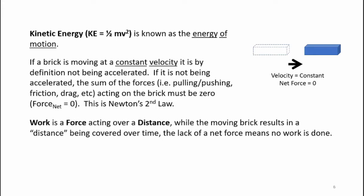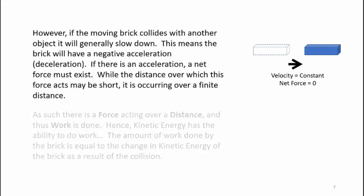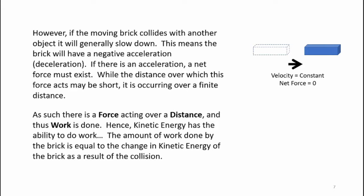Since work is a force acting over distance, while the moving brick results in a distance being covered over time, the lack of a net force means no work is done. However, if the moving brick collides with another object, it will generally slow down — meaning the brick will have a negative acceleration, also known as a deceleration. If there is an acceleration, a net force must exist. While the distance over which this force acts may be short, it is occurring over a finite distance, and thus work is done. Hence, kinetic energy has the ability to do work. The amount of work done by the brick is equal to the change in kinetic energy of the brick as a result of the collision.